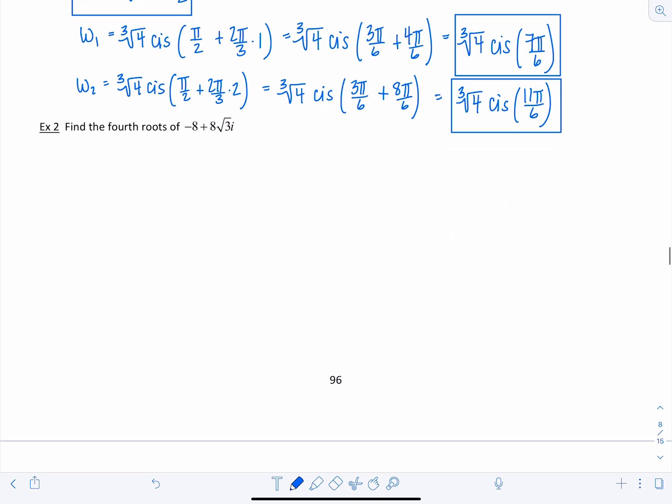So find the fourth roots of negative 8 plus 8 rad 3 i. So this is our complex number. They're asking for us to find the fourth roots which means n is equal to 4. So first thing I want to write z in trig form. So r is going to equal the square root of negative 8 squared plus 8 rad 3 squared. So what's that going to give us?